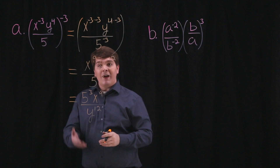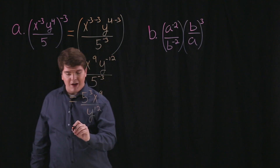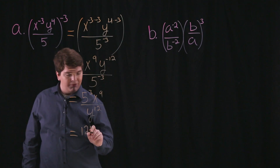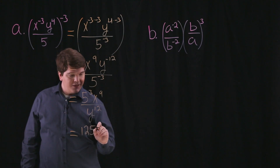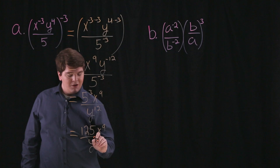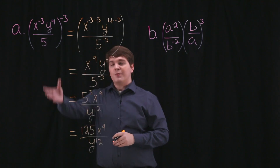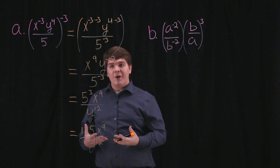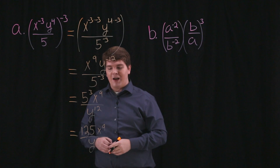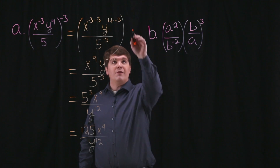We can evaluate 5 cubed, which is just 125, so this becomes 125 x to the 9th divided by y to the 12th. So this expression written with only positive exponents is 125 x to the 9th divided by y to the 12th.